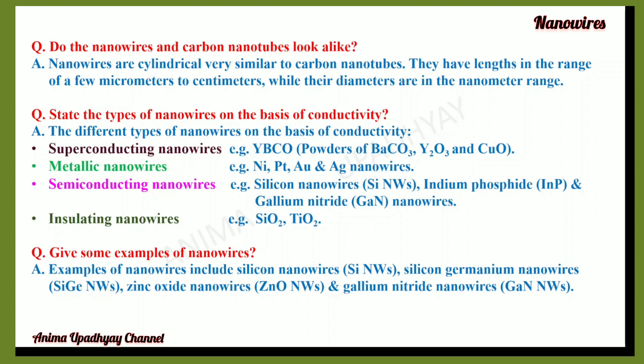Examples of nanowires include those listed under the types of nanowires by conductivity. Other examples include silicon nanowires, silicon germanium nanowires, zinc oxide nanowires, gallium nitride nanowires, and many more.